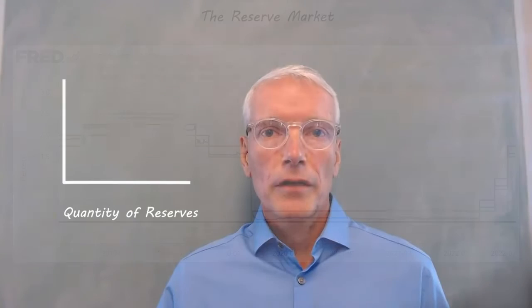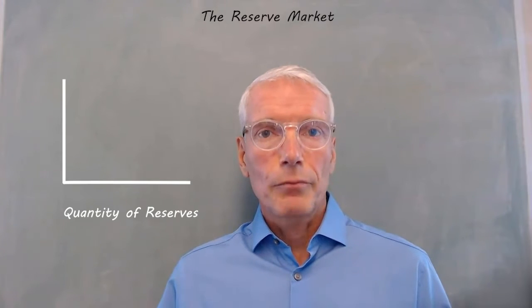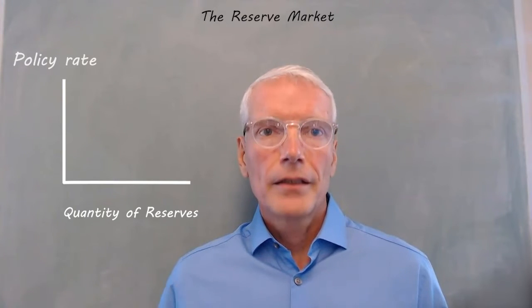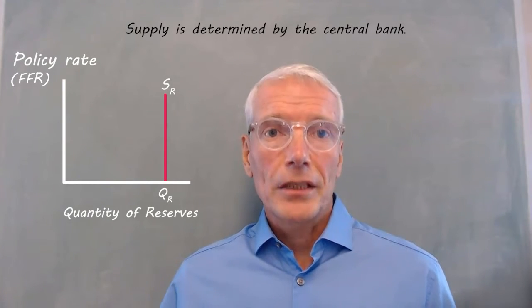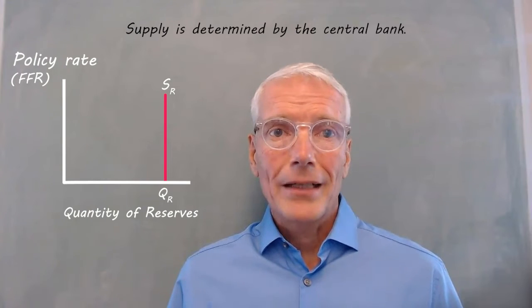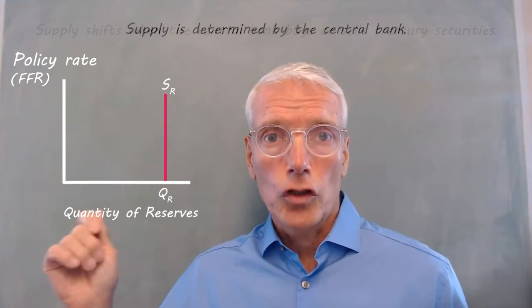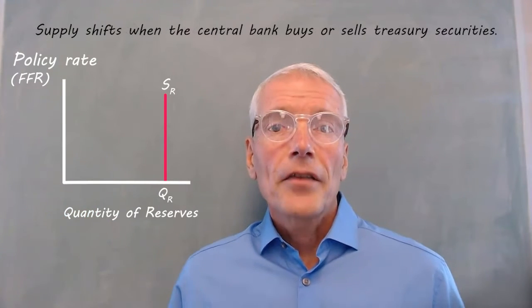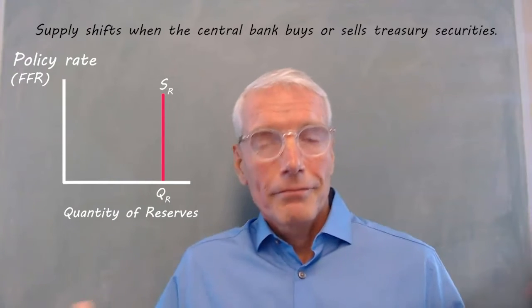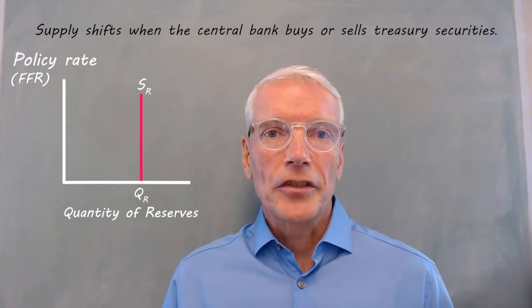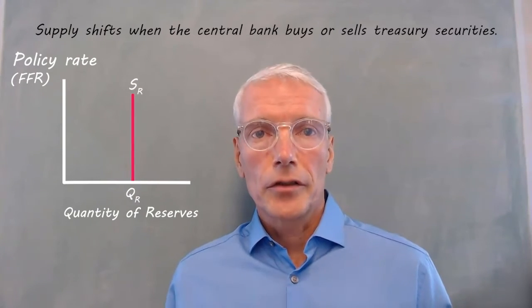Let's look at the market for bank reserves, the price of which is the policy rate. The supply of reserves is determined by the central bank, so it doesn't depend on the policy rate, which makes the supply curve vertical. The central bank can use open market operations, buying and selling treasury securities, to increase or decrease the supply of reserves.